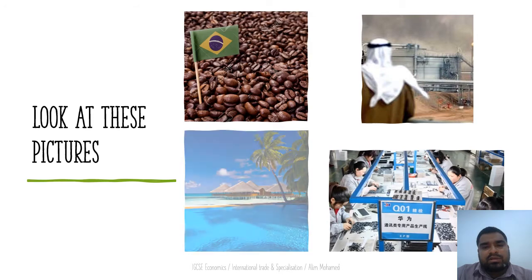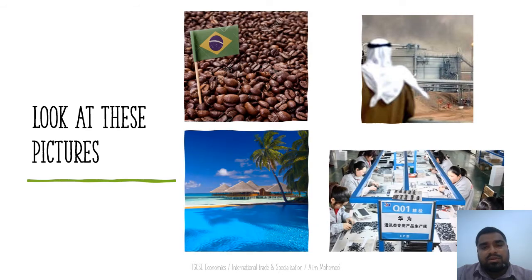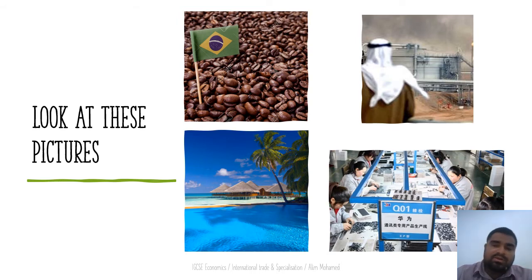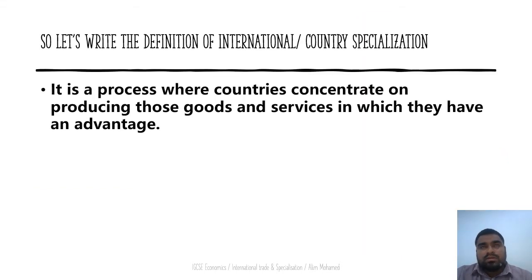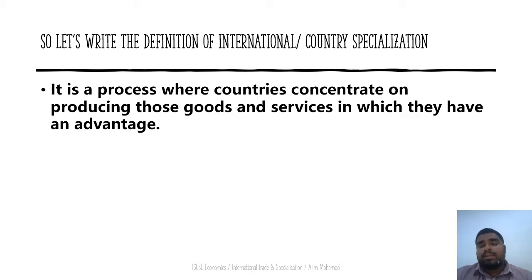For example, Maldives specializes in tourism, Saudi Arabia and Middle East countries specialize in oil, and China and Japan specialize in electronics. These are some examples of international specialization. Formally, it is defined as a process where countries concentrate on producing those goods and services in which they have an advantage.